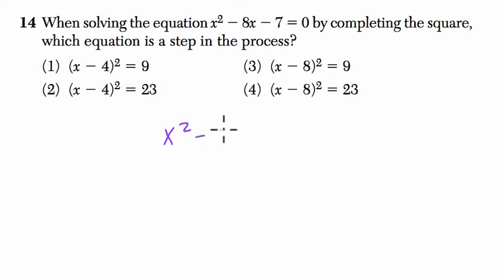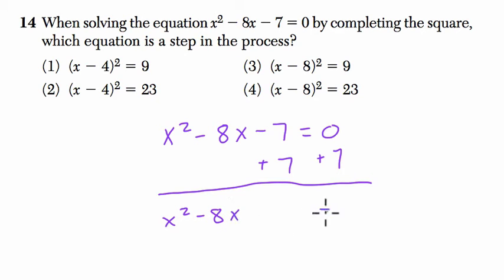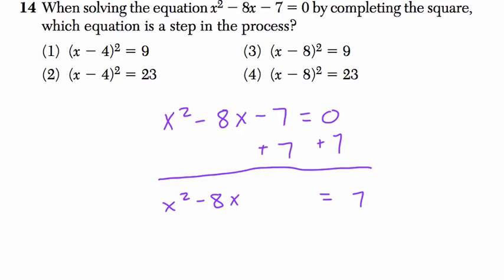So you have x squared minus 8x minus 7 equals 0. My first step in completing the square is to add over the constant term. You don't have to do it first, but I do that to prevent myself from making mistakes. I leave some space to complete the square, and I have x squared minus 8x equals 7.